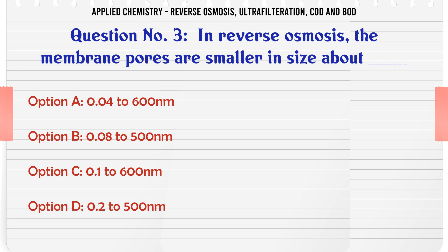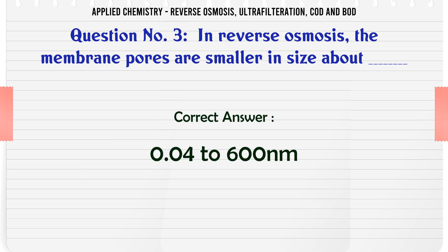In reverse osmosis, the membrane pores are smaller in size, about: a) 0.04 to 600 nm, b) 0.08 to 500 nm, c) 0.1 to 600 nm, d) 0.2 to 500 nm. The correct answer is 0.04 to 600 nm.